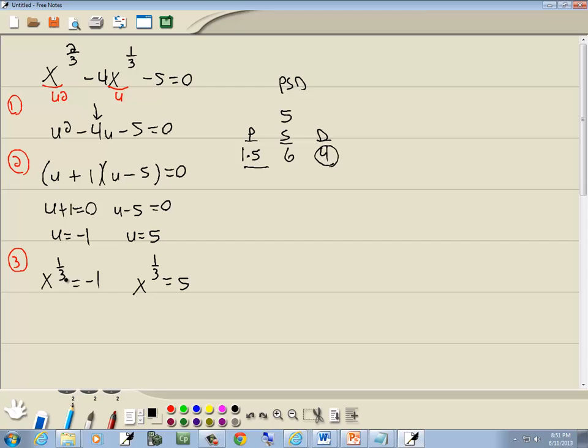Well, this is a rational exponent. To get rid of the exponent, we're going to take both sides to a power equal to the reciprocal of this. So we've got 1 third, so we'll take both sides to the 3 over 1 power, or the third power.